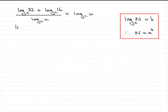Now this part of the question, we're given log₂(32) + log₂(16), all divided by log₂(x), equals log₂(x). So how do we find out what x is?